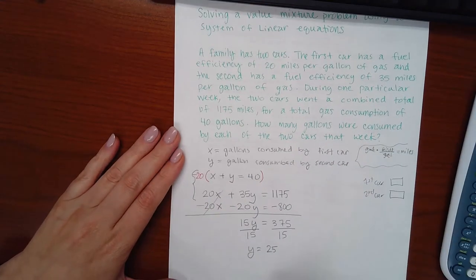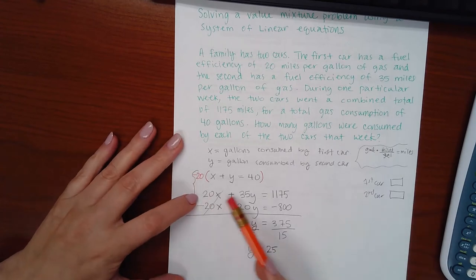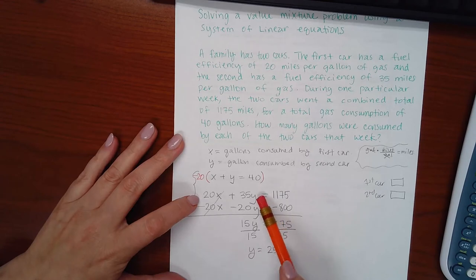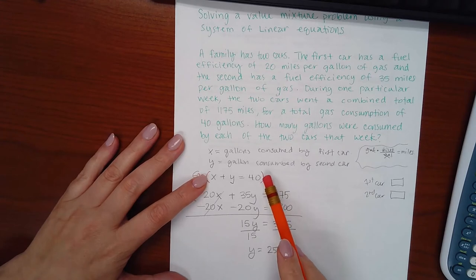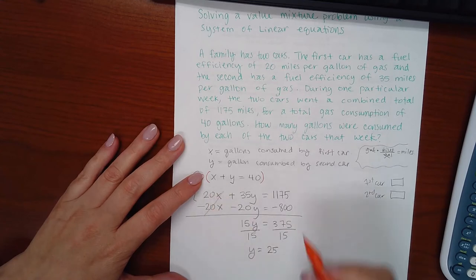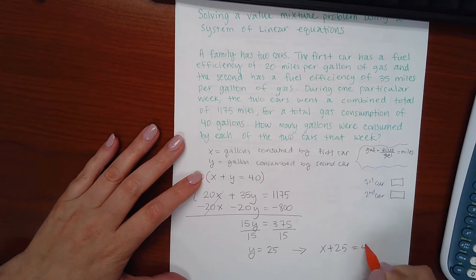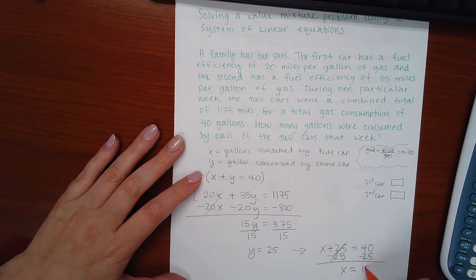Then I need to go back and find x. This equation has a bunch more things happening to the variables, so I would much rather plug my variable into the other equation. So then that's going to become x plus 25 equals 40. If I minus 25 on both sides, I get x equals 15.